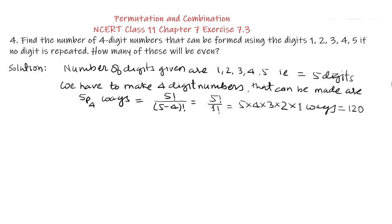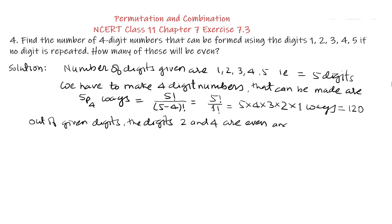So we solve like this: out of the given digits, 2 and 4 are even, and 1, 3, 5 are odd. So the numbers ending with digits 2 and 4 will be even, and the numbers ending with 1, 3, and 5 will be odd. We find that out of the 5 digits, 2 and 4 are 2 digits, and 1, 3, and 5 are 3 digits.